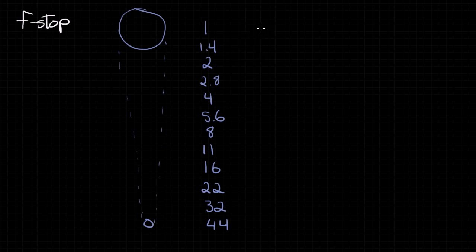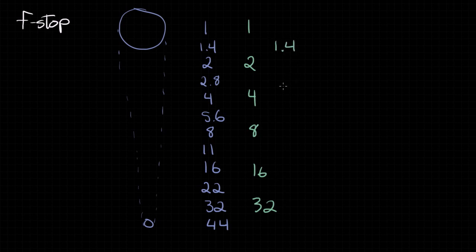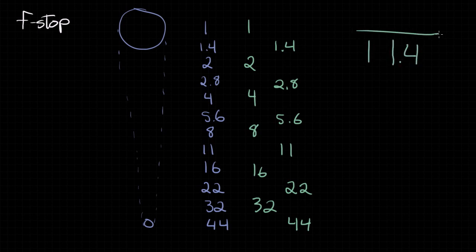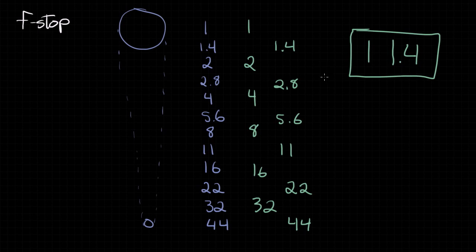The scale still looks confusing, but here's a small trick to make it easy to remember. Starting at 1 and looking at every other number: 1, 2, 4, 8, 16, 32 — every time we skip a number, we're doubling. And starting at 1.4: 1.4, 2.8, 5.6, 11, 22, 44 — same pattern. So as long as you remember these first two numbers — 1 and 1.4 — you can build out the entire rest of the scale just by skip counting and doubling each time. It makes it a lot easier to remember.